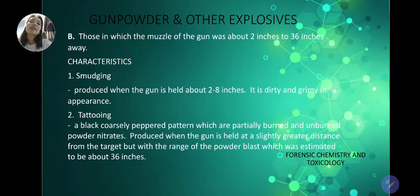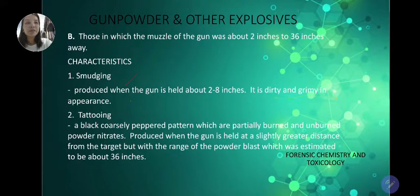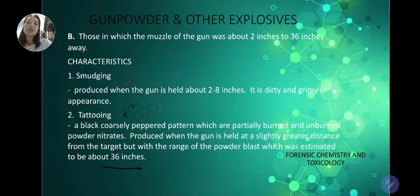Zone B: the muzzle of the gun was about 12 to 36 inches away. We can observe smudging, which is produced when the gun is held about 2 to 8 inches away — it is dirty and grimy in appearance. There is also tattooing: a black, coarsely peppered pattern of partially burned and unburned powder nitrates appearing as dots around the gunshot wound. Tattooing is produced when the gun is held at a slightly greater distance, within the range of the powder blast, estimated to be about 36 inches.